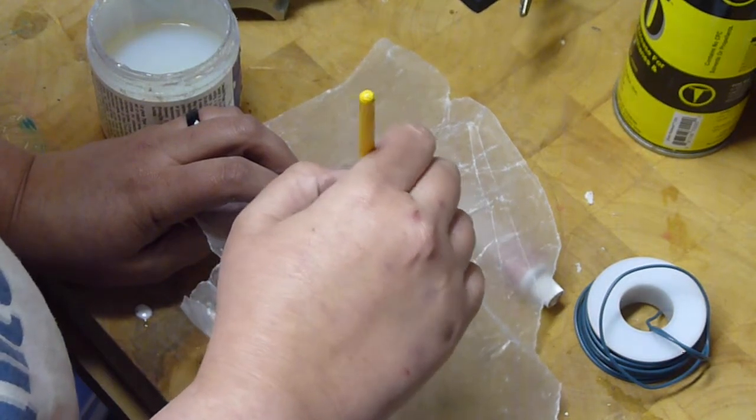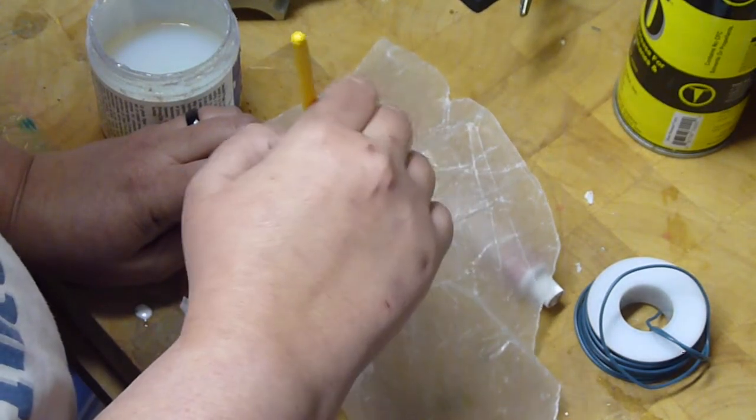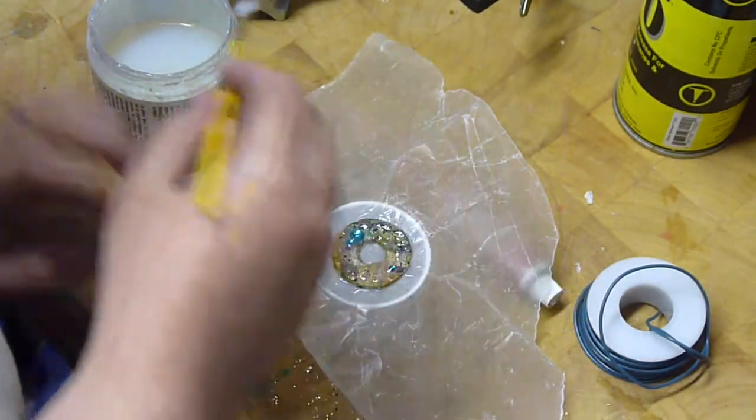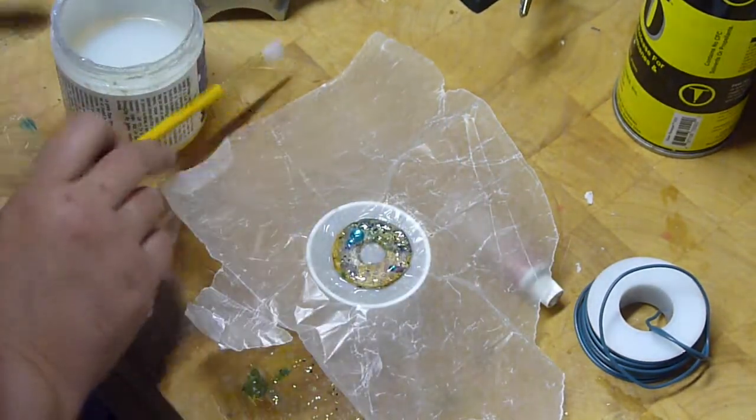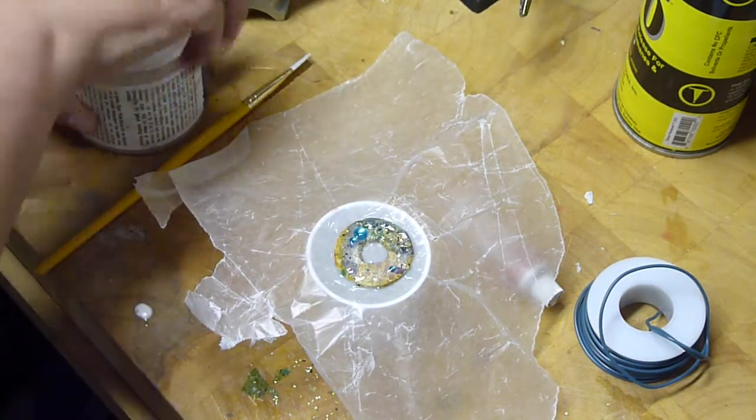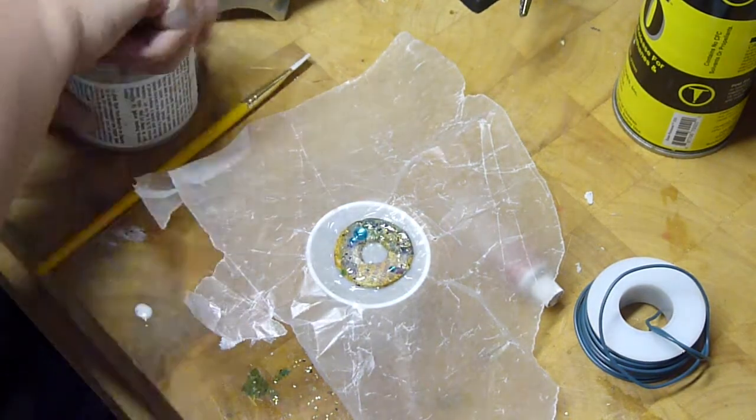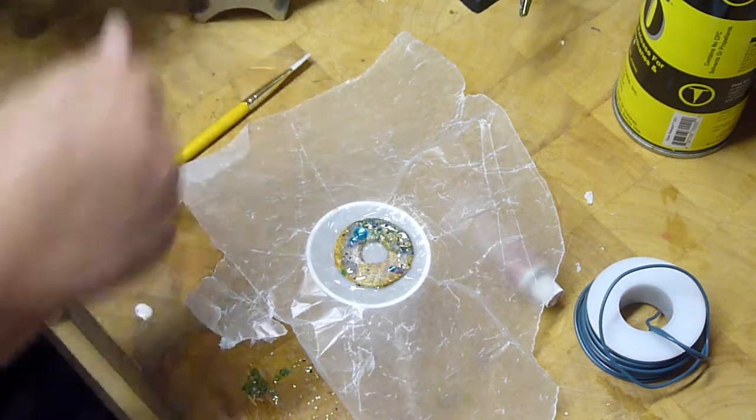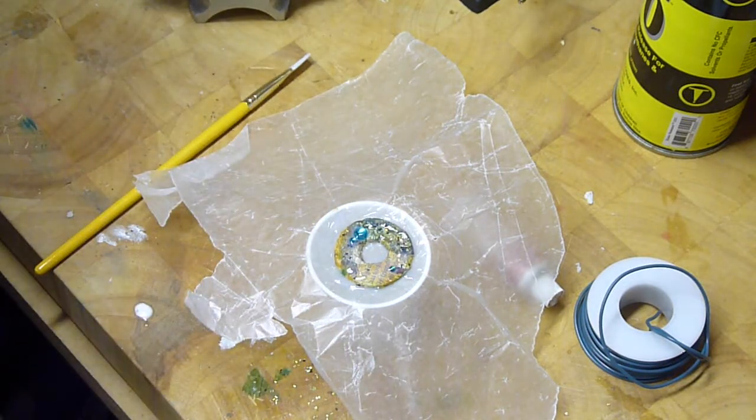You can sand triple thick. It doesn't sand as well as some other resins because it does not get like, it dries clear and it will dry solid, but it's almost like a rubbery feel. So you will want to go ahead and use a different type of resin if you're wanting to sand and mold this.